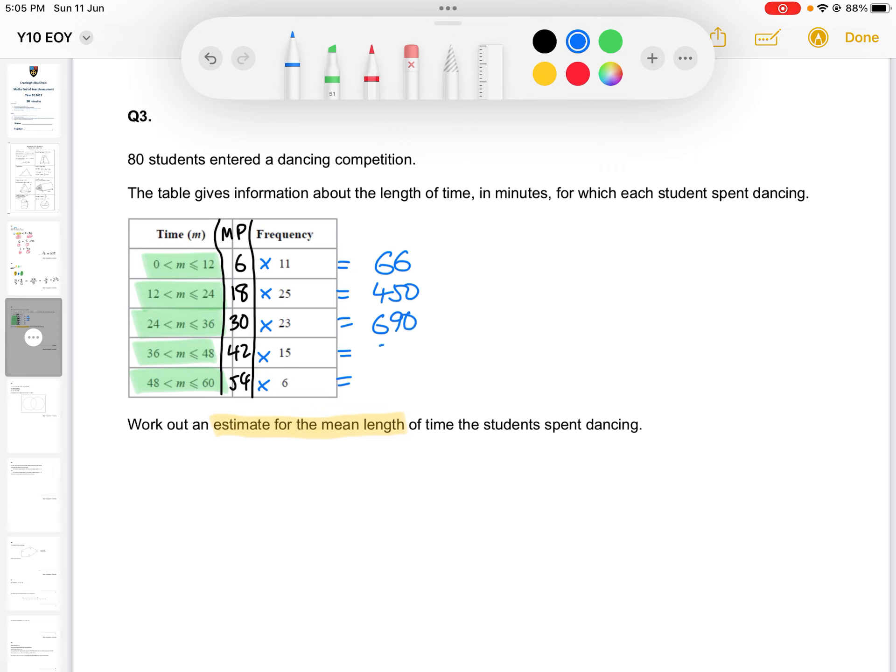We then, after we've got all of these numbers, add them together. There's not really any room to squeeze it in here, so I'm just going to show it as follows, adding them together, which will give us 2,160 minutes in total. So that's the grand total of the number of minutes, an estimate of that the students spent dancing.